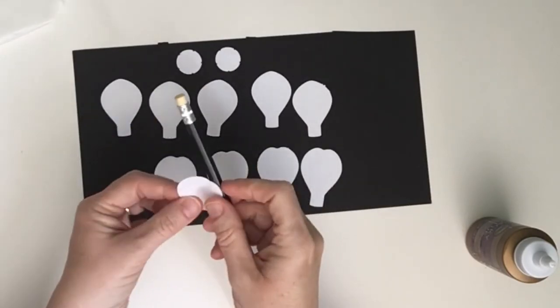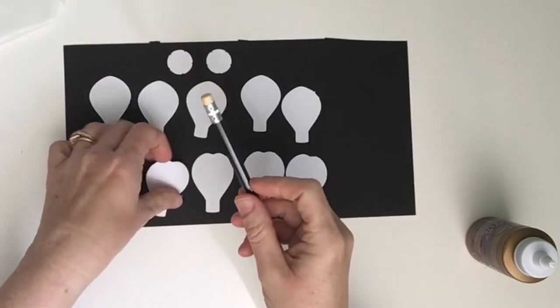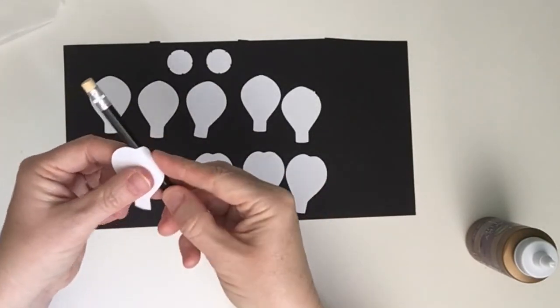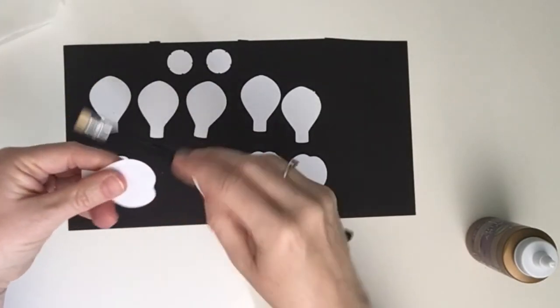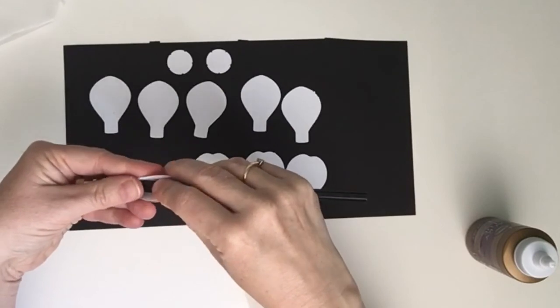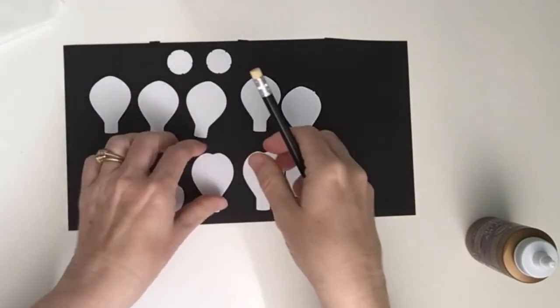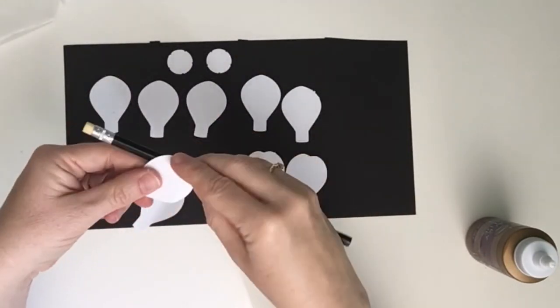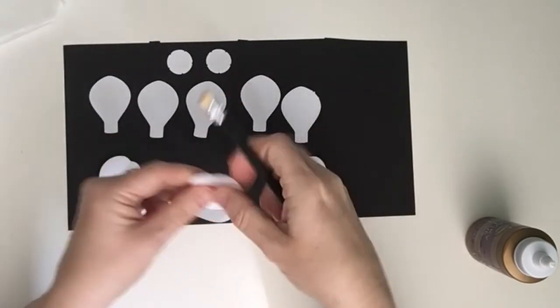Now the only criticism on the Cricut app is that the directions for assembling a lot of these projects are pretty vague. So you have to kind of look at the picture and look at videos such as this to help you piece all these pieces together. But once I did one, I kind of got the hang of it.